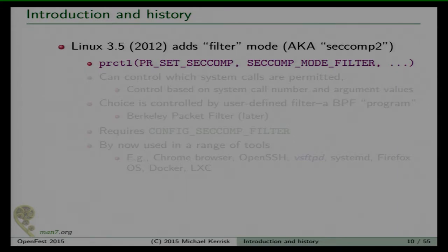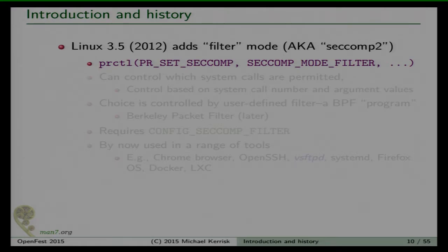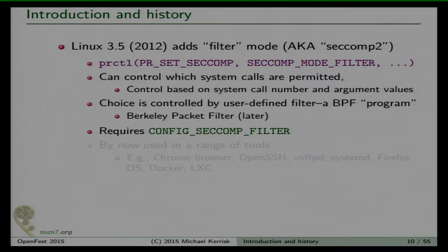Things started to get really interesting about three years ago. Linux 3.5 added so-called filter SecComp mode. Whereas strict mode limited you to exactly four system calls, with filter SecComp mode you can actually choose which system calls are going to be allowed. Your program might permit those four traditional calls plus perhaps half a dozen others — but if it tries anything else, it gets killed. You set this up with PRCTL PR_SET_SECCOMP SECCOMP_MODE_FILTER, passing a pointer to the filter.